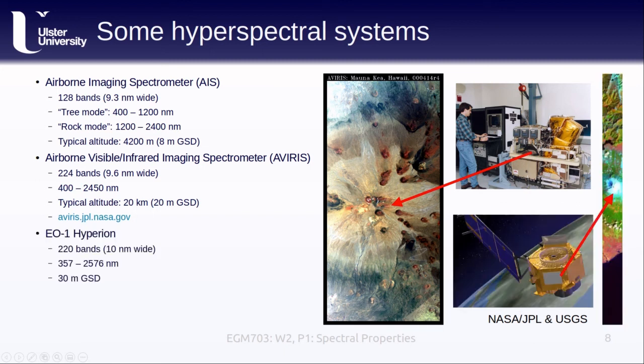And finally, we will talk about the Earth Observing-1 Hyperion, which is a space-borne hyperspectral sensor. As mentioned previously, it has 220 bands at about 10 nanometers bandwidth, and a similar spectral range as AVIRIS. It also has a 30 meter ground sampling distance, which is directly comparable to most Landsat bands. The example image shown here shows a Hyperion scene acquired over Mount Fuji, Japan, alongside an artist's rendering of the EO-1 satellite.